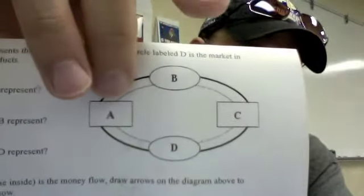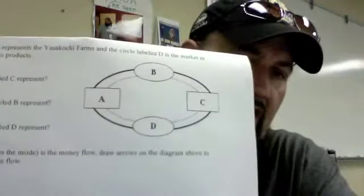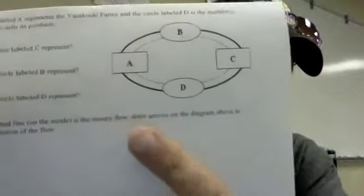On this problem, it tells us that the circle labeled D — the one on the bottom — is the market where the company sells its products. So A is the firm, and they're going to sell their goods over in D. The households come from C down to D and buy themselves some lettuce. So D is the markets for goods and services. That's where the buyers and sellers from A and C go down and meet in D to make those transactions.